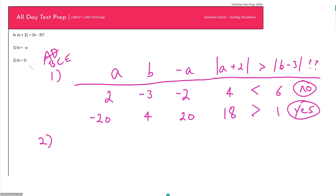Statement 2 says b is less than zero, but it tells us nothing about a. By itself, this is not going to be helpful, so we can eliminate answer choice B and move straight to looking at Statements 1 and 2 together.